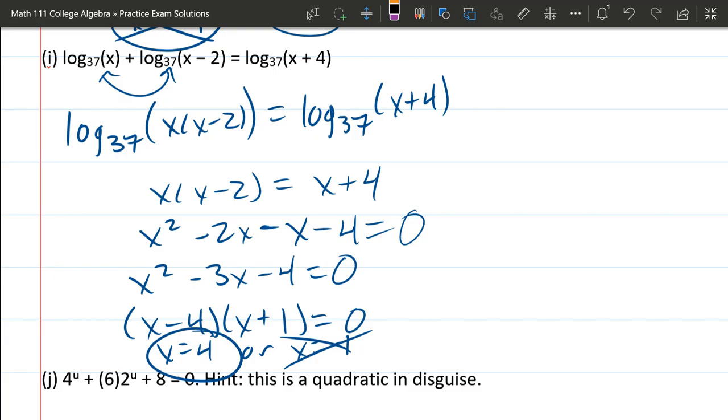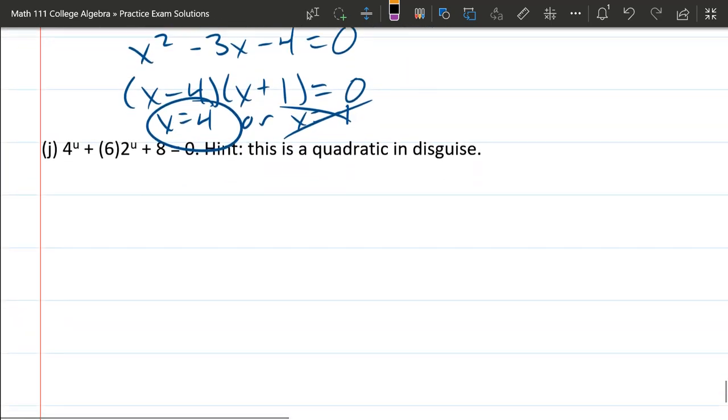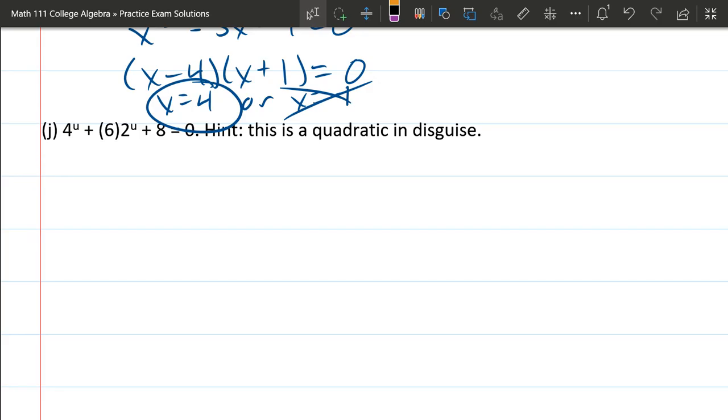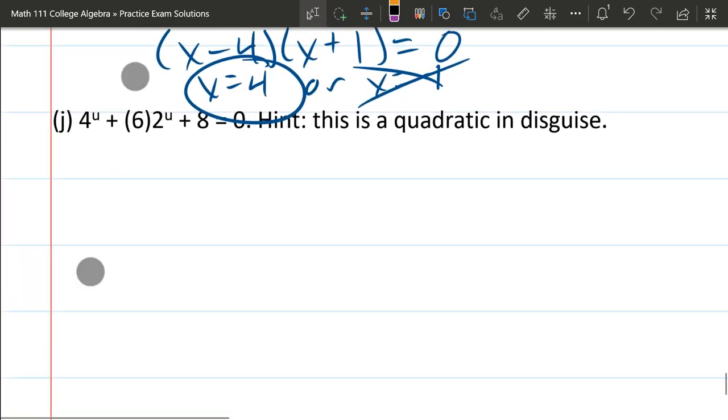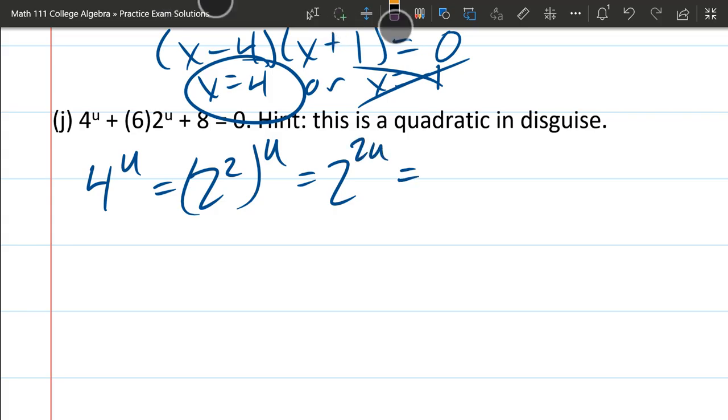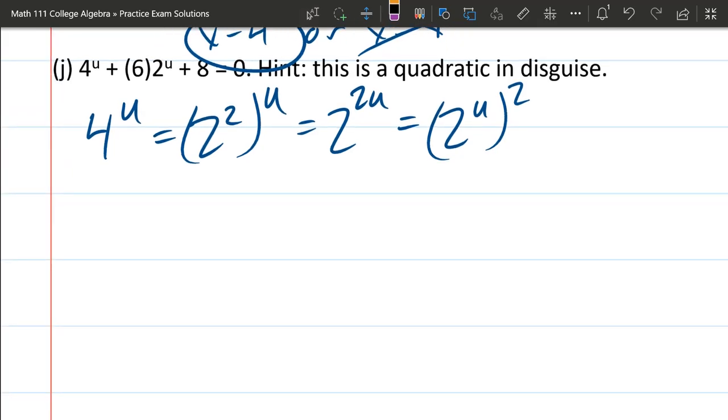Generally, when you get two solutions, the smaller one is going to be invalid. So we're into our last problem. Now we did one like this in class. So the first thing we're going to do, 4 to the u is 2 squared to the u, which is 2 to the 2u, which I can write as 2 to the u squared. I'm going to rewrite that first term. So we have 4 to the u plus 6 times 2 to the u plus 8 equals 0. Now you're going to notice my 4s look a lot like my u's. Everybody has some aspects of their font of their writing that look similar. My u's and my 4s look similar, so be careful.